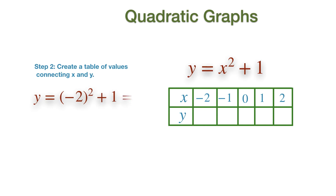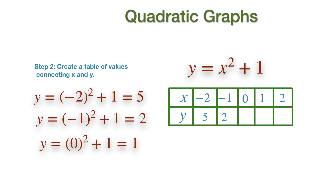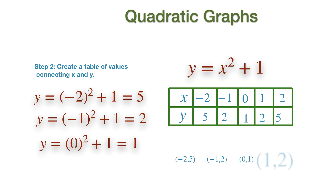When X equals to minus 2, Y will be given by (-2)² plus 1, which gives us 5. Similarly, when X is minus 1, Y is going to be 2. When X is 0, Y will be given by squaring 0 plus 1, which also equals to 1. The coordinates that the graph passes through are (-2, 5), (-1, 2), (0, 1), (1, 2), and (2, 5).